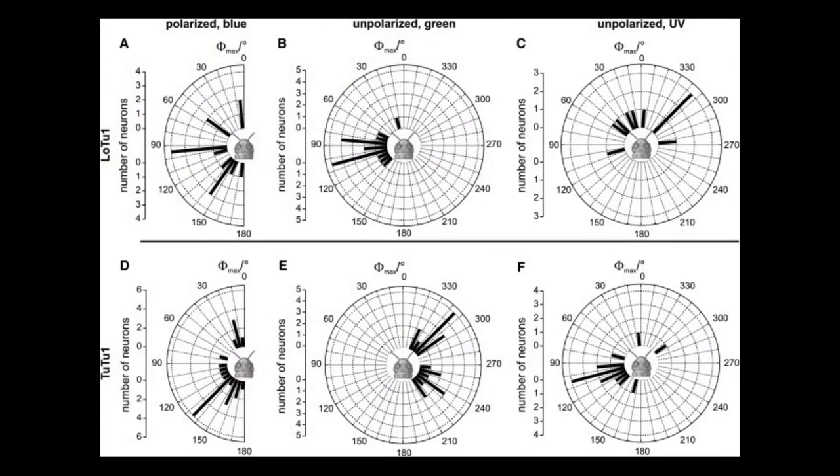This diagram shows a study that was done where scientists were able to detect the neural response in the eyes of grasshoppers. The grouping for specific angles shows that the eyes of the grasshoppers became more stimulated for a specific angle of polarization, and that this was different for different wavelengths of light.